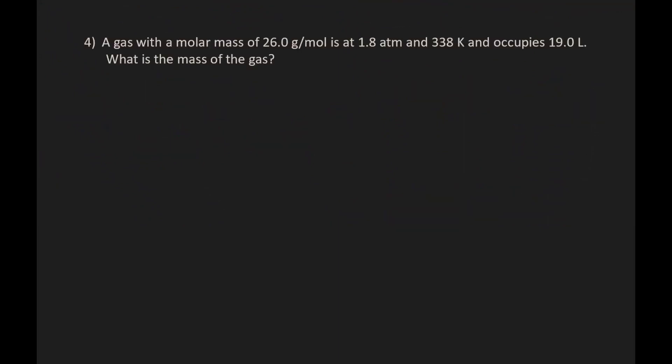Problem number four: A gas with a molar mass of 26.0 grams per mole is at 1.8 atmospheres in 338K and occupies 19.0 liters. What is the mass of the gas?